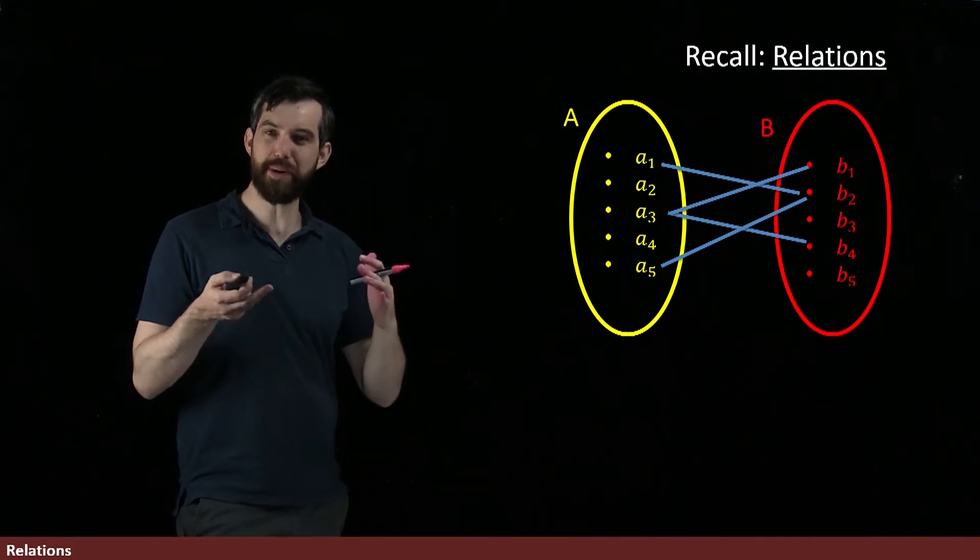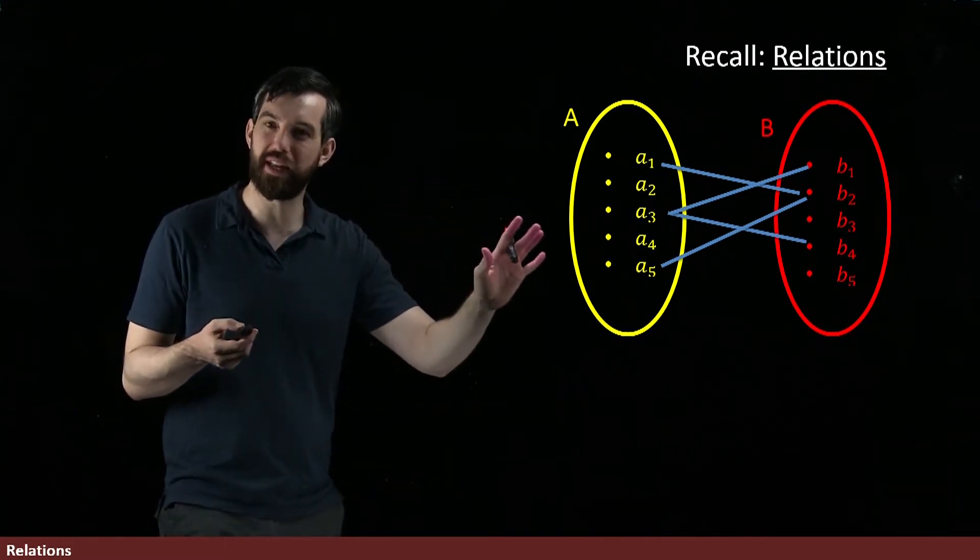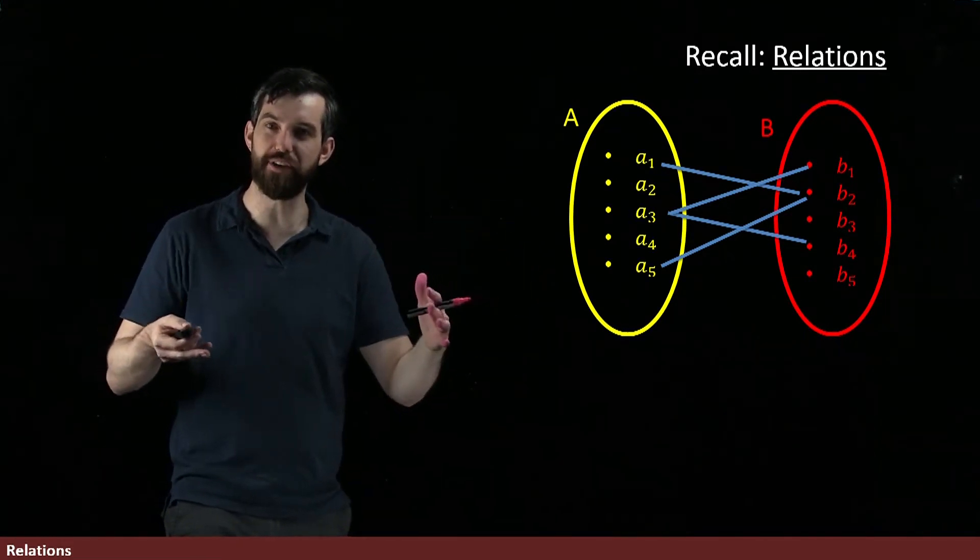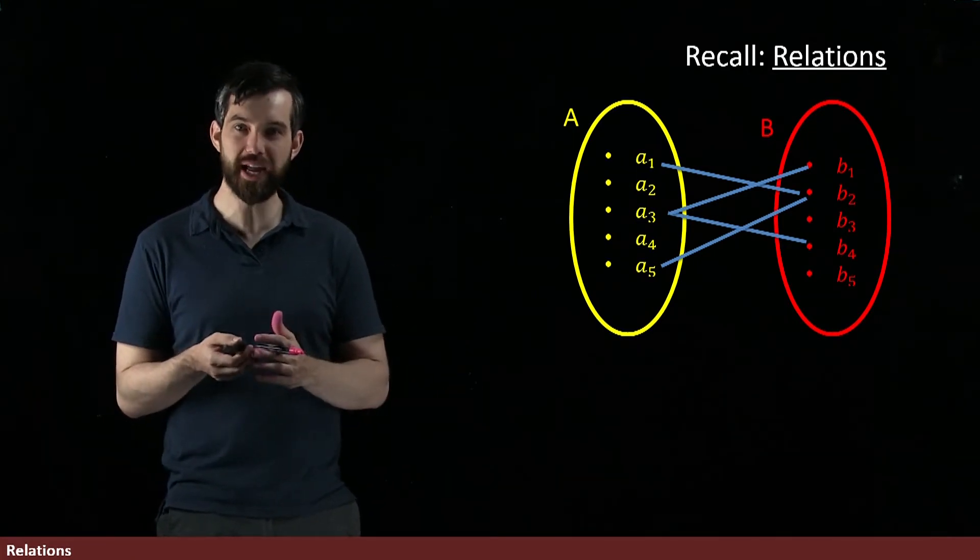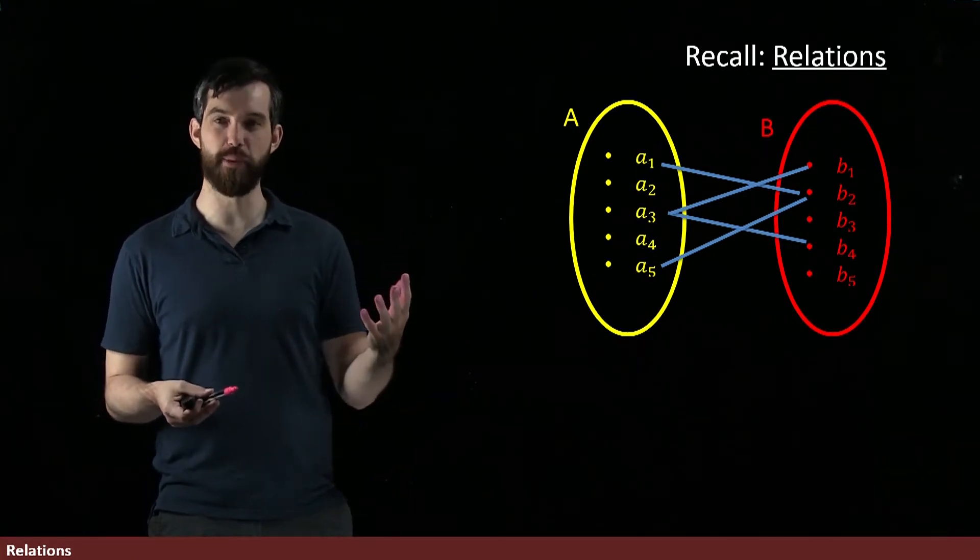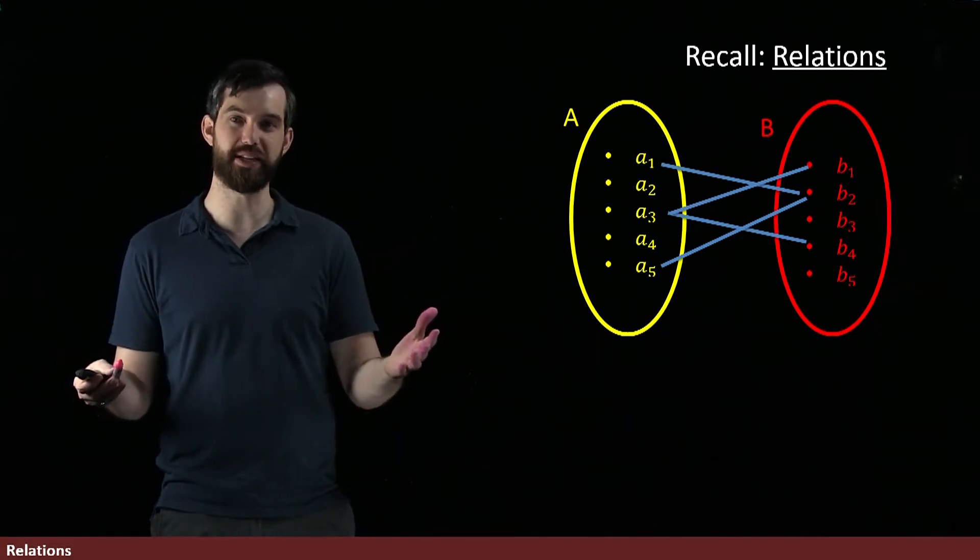And then you would be able to sometimes say that a relation was a function if additionally it had the property of passing the vertical line test and that everything in the domain went somewhere. We'd previously discussed that.